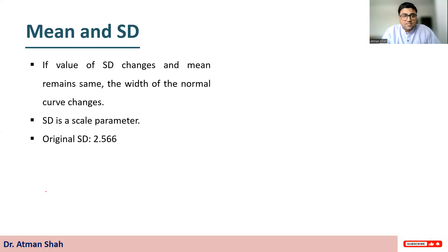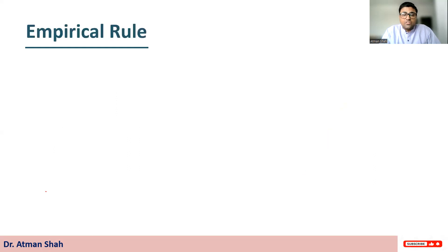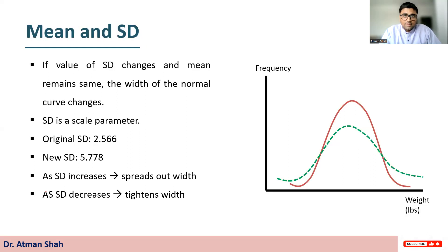Original standard deviation is 2.56. Suppose standard deviation increases from 2.56 to 5.778. So you can see the new normal distribution or normal curve. So as standard deviation increases, this spreads out the width of the normal curve. And if the value of the standard deviation decreases, it tightens the width of the normal curve.